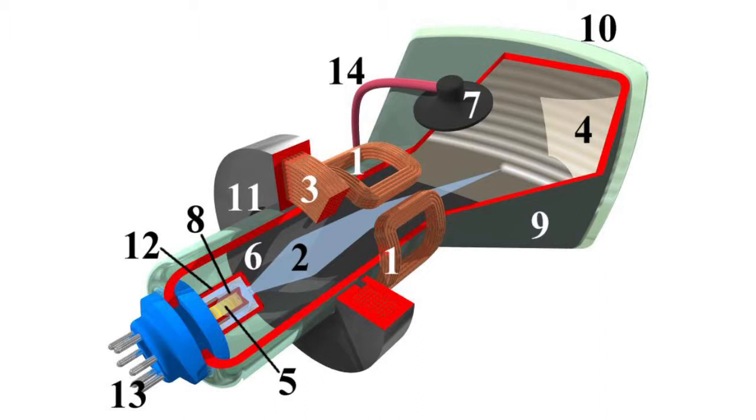By changing the voltage at the controlling electrode modulator 12, we can change the intensity of the electron beam and therefore the brightness of the image.